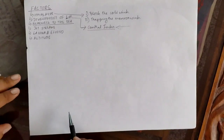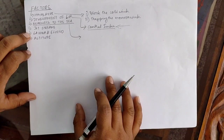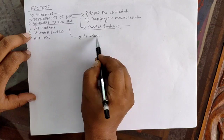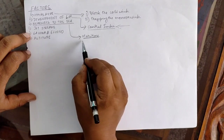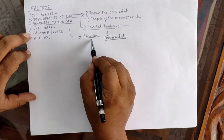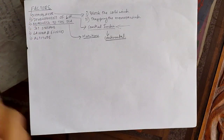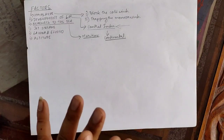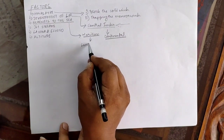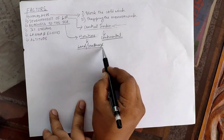Another factor is nearness to the sea. The coastal areas of our country will have a different type of climate compared to the interior part. Coastal areas will have maritime type of climatic conditions, whereas central India — the interior part — will have continental type of climatic conditions. Maritime climatic conditions means neither too hot nor too cold, whereas continental means extreme type of climate: very hot in summer and very cold in winter. Maritime conditions are because of the constant exchange of air — that is, the land breeze and sea breeze.